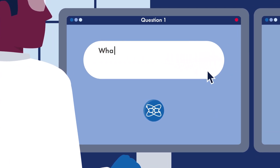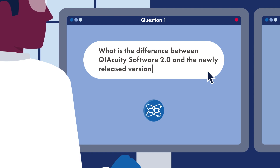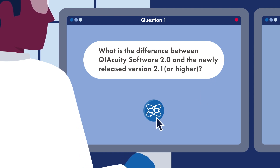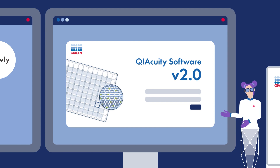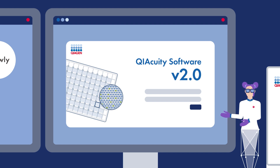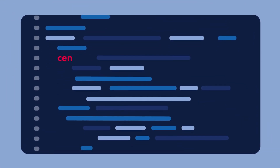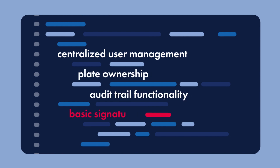Question 1: What is the difference between KaiaQuity Software 2.0 and the newly released version 2.1 or higher? KaiaQuity Software 2.0 already offered support for 21 CFR Part 11 and GMP Annex 11 compliance, such as centralized user management, plate ownership, audit trail functionality, and basic signature features.